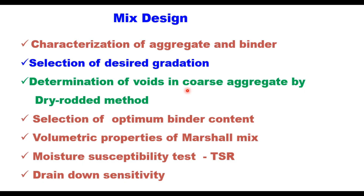The mix design procedure for SMA is more or less similar to what we do for any other bitumen layer, with a few exceptions. The steps include: characterization of aggregate and binder, selection of a desired gradation — where voids in coarse aggregate in dry rodded condition should be more than voids in the mix, ensuring stone-on-stone contact which provides more resistance to rutting — then selecting optimum binder content corresponding to 4% air voids, and finding out the volumetric properties of Marshall specimens.